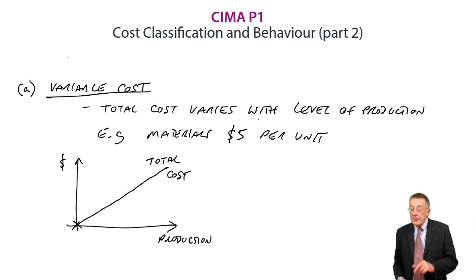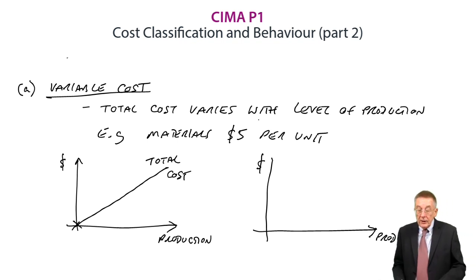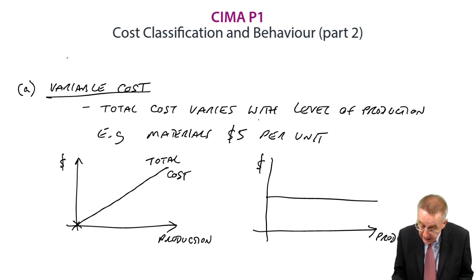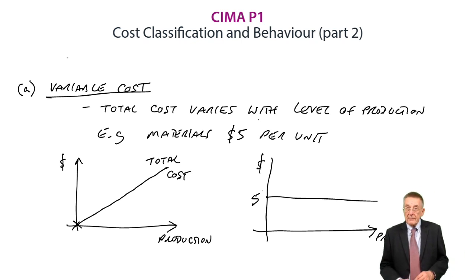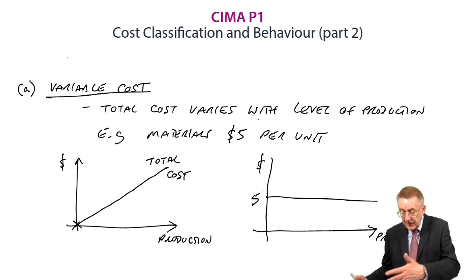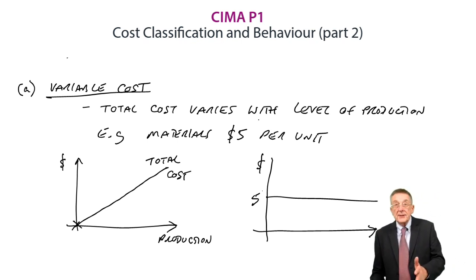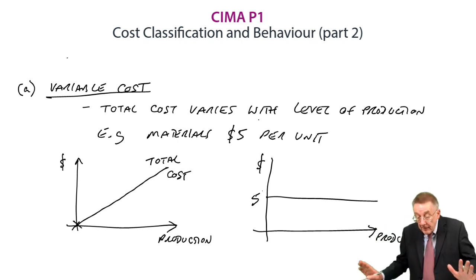Be careful in the exam, be very careful. The total cost you'd expect to go like that. But the cost per unit, surely materials are $5 a unit. It doesn't matter how many we produce, it'll stay at $5. There are situations where the cost per unit could change if we produced a lot. For the moment, for paper F2, something like materials, it's $5 a unit, however many we make.